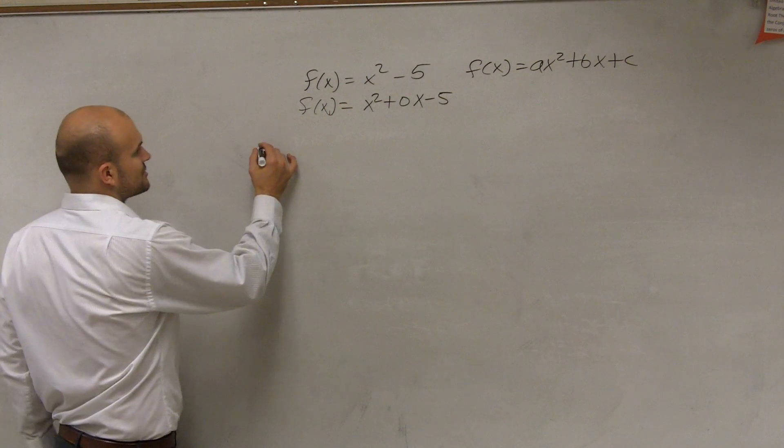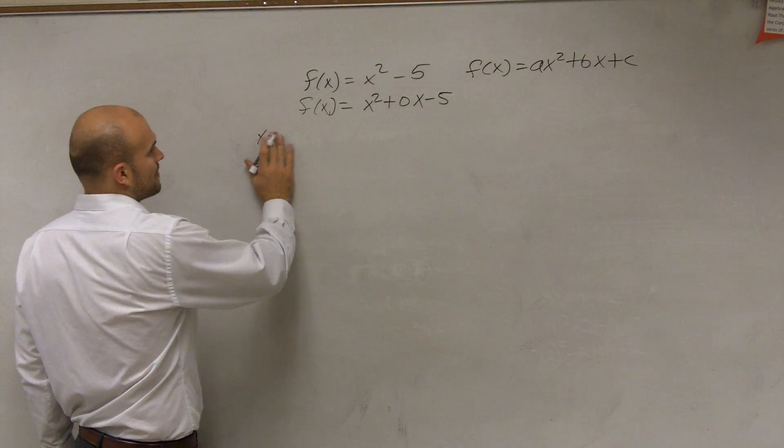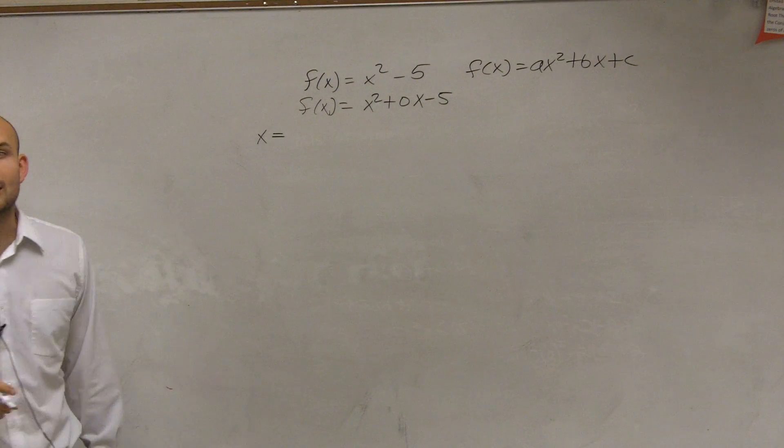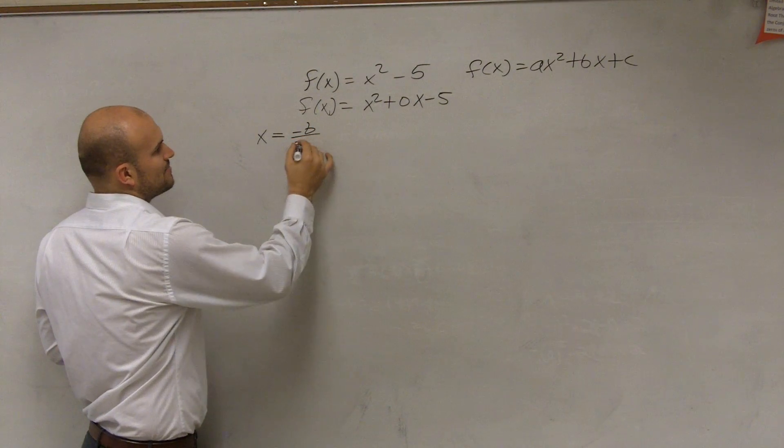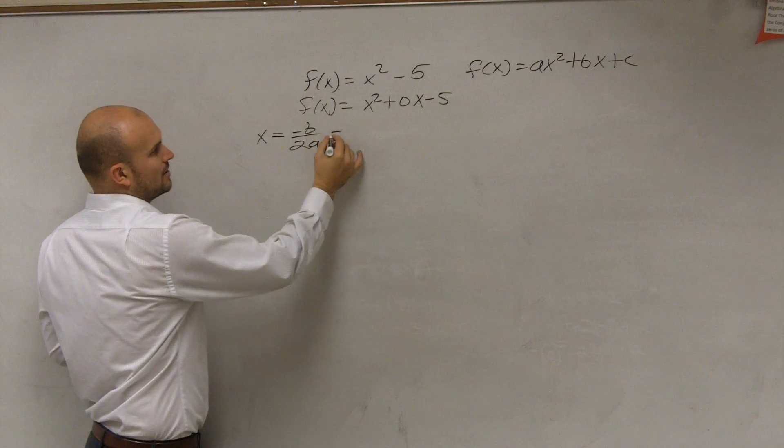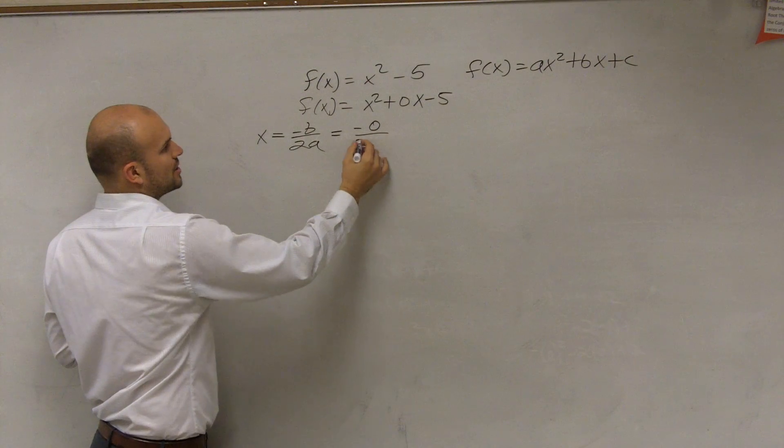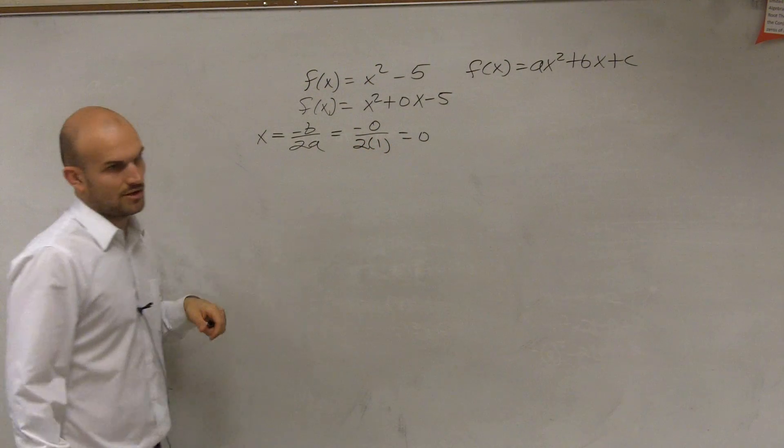So the first thing I want to do is find the axis of symmetry. The axis of symmetry, remember, is the vertical line that is symmetrical of our parabola. The axis of symmetry is opposite of b divided by 2a, which in this case is the opposite of 0 divided by 2 times 1, which equals 0.